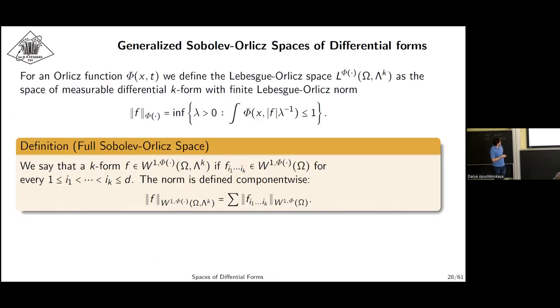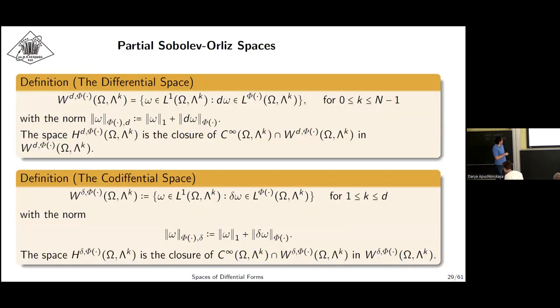What is the difference with the standard functional setting? For forms you can work with the so-called full Sobolev-Orlicz space, which means that all components of the differential forms are in the corresponding Sobolev-Orlicz space. Or you can work with partial, a more general object and in some sense more natural object for these problems, partial Sobolev-Orlicz space, where you have only differential or co-differential from the corresponding Orlicz space.